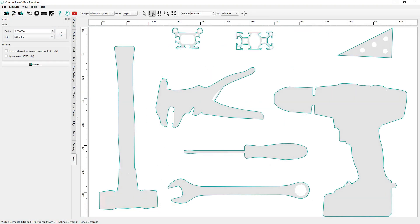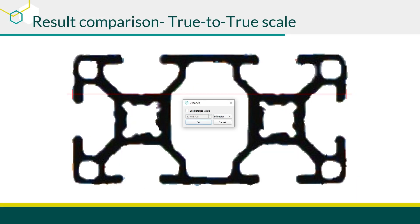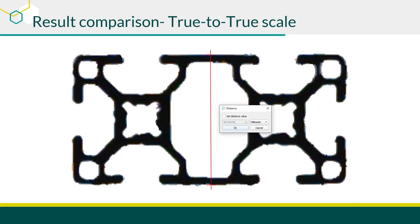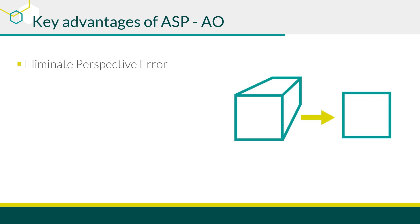Next, we will extract the contours from the generated image and verify how accurately these contours match the actual dimensions of the object. In summary, the Area Scan Portal provides several key advantages. Conventional cameras often introduce perspective errors that distort contours. The Area Scan Portal provides an orthogonal view, ensuring precise, true-to-form and true-to-scale contour extraction.